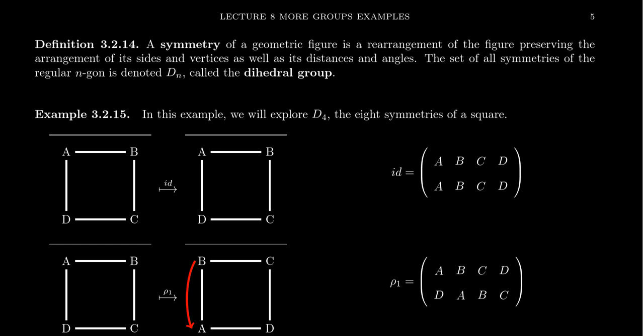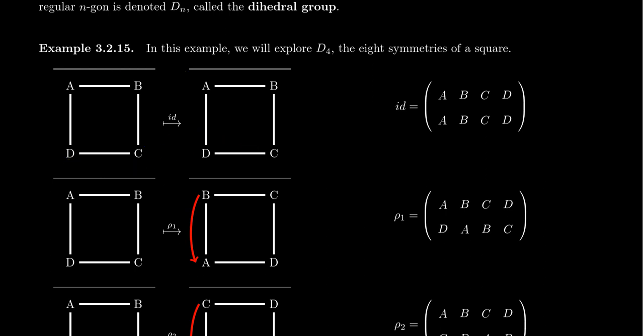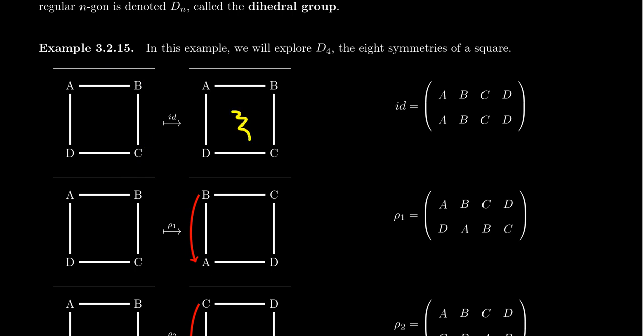The sets of symmetries will actually form a group structure. I claim that D4, the symmetries of the square, will have eight different symmetries. Symmetries themselves are just permutations of the vertices. Permutation multiplication is really just function composition — it's associative and there is an identity. That's the first of the eight symmetries: the identity permutation, where A goes to A, B goes to B, C goes to C, and D goes to D. I've labeled the vertices of the square A, B, C, D oriented clockwise, and the image of the square is shown on the right.